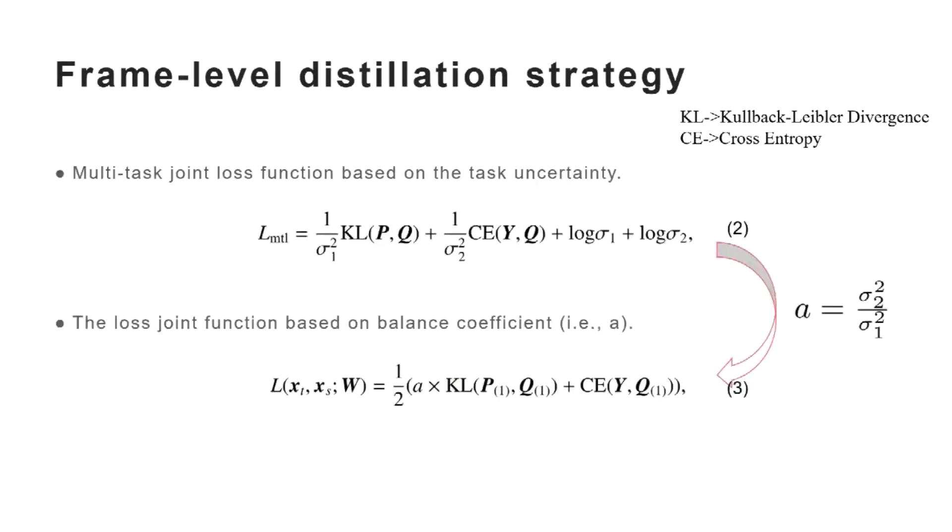To avoid tuning T and alpha manually, we derive a multi-task joint loss function as equation 2 based on the task uncertainty, where T and alpha are not considered anymore, and we automatically learn the observation noise scalars sigma 1 and sigma 2.